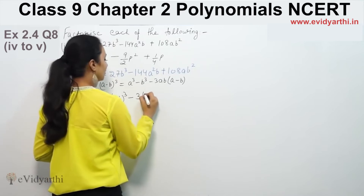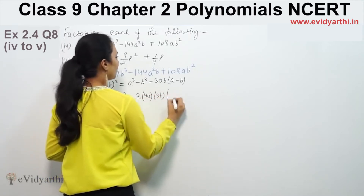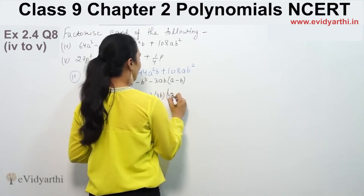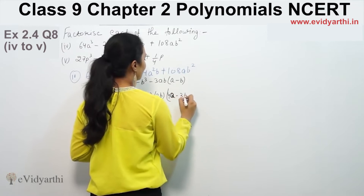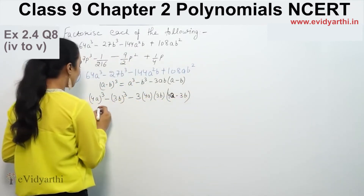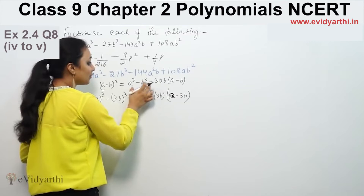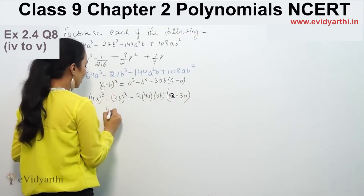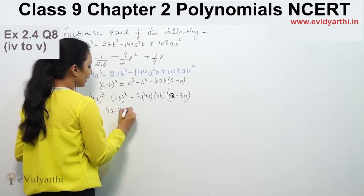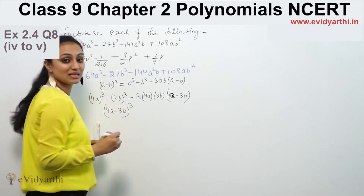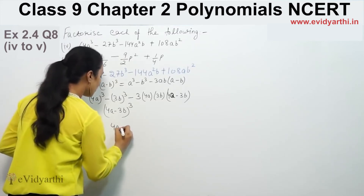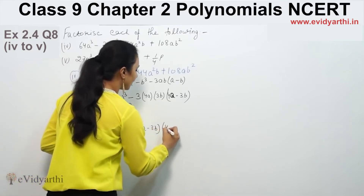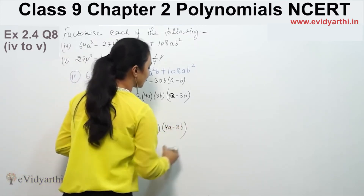So we have minus 3ab, where a here is 4a and b is 3b. The bracket gives us (4a - 3b). Using the (a - b)³ formula with a = 4a and b = 3b, we can write the factored form as (4a - 3b) × (4a - 3b) × (4a - 3b), that is (4a - 3b)³.